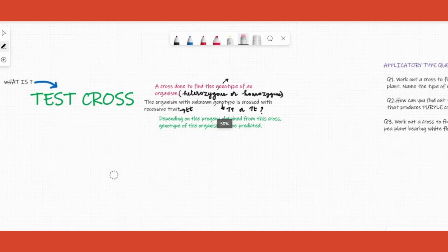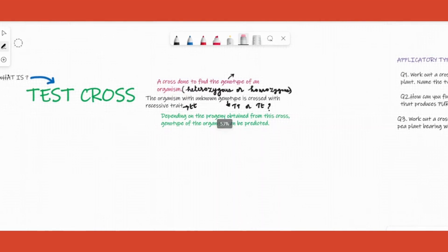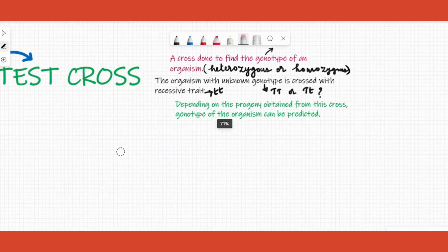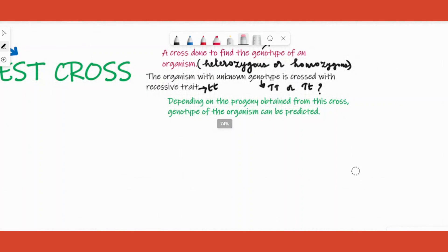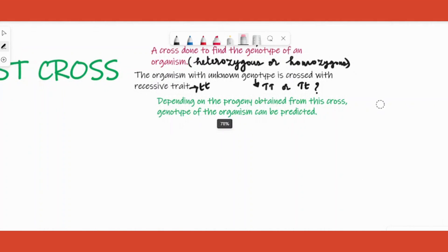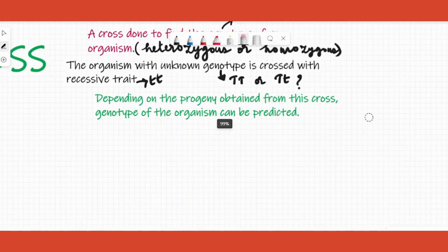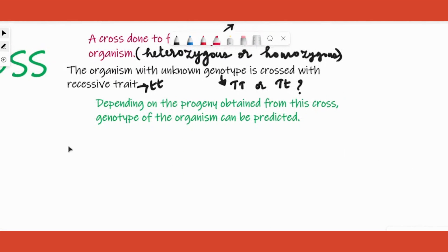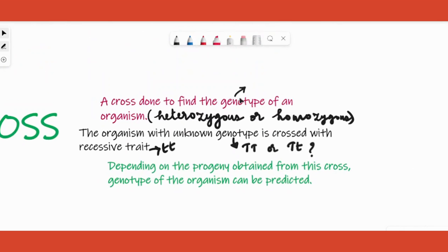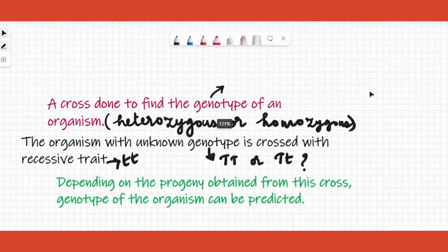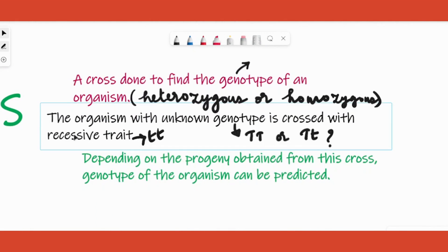Hi students, today we will be doing some applicatory type questions from test cross. Let's look at what is meant by test cross first. If you are given an organism but you don't know the genotype of that organism, how do you find it out? In order to know that, we need to cross it with a recessive trait.